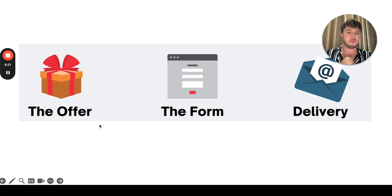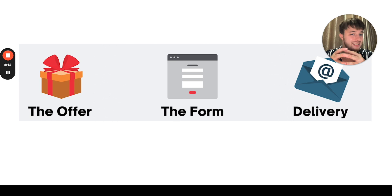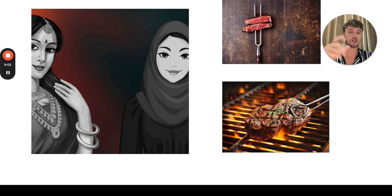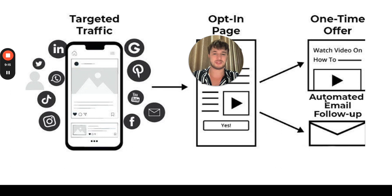The next thing is lead magnets — we want to build an email list on the back end. We offer a form with name and email, and deliver it through an autoresponder: simple software that sends emails for you 24/7 while you sleep. Many people are not doing this — they're not taking action, they're procrastinating, and then they wonder why they're not getting great results. It's all about having the right message-to-market match. Our system is: traffic from Google, Facebook, or YouTube ads → opt-in page → one-time offer → automated email follow-up sequence. That's all it takes to get to $10,000 or more per month.